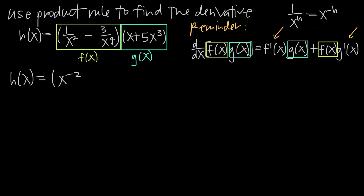Same thing for the second term: we have x to the 4th in the denominator. When we move it to the numerator, we keep the negative 3, so minus 3, and x to the 4th becomes x to the negative 4. Then we keep the second function exactly as it is: x plus 5x cubed. So our first factor is still f(x) and our second factor is still g(x).